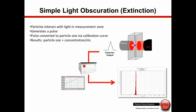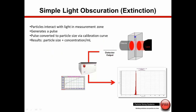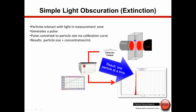The basic technology is simple light obscuration, or extinction. As particles pass through the cell, there's a light source and the particles obscure part of it, essentially casting a shadow. This generates a pulse which goes through a pulse analyzer, which we also call the counter. Through the use of a calibration curve, each pulse is converted into a particle size distribution.